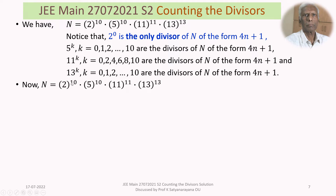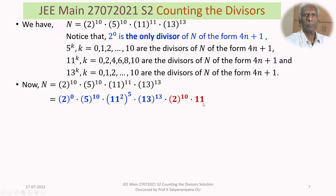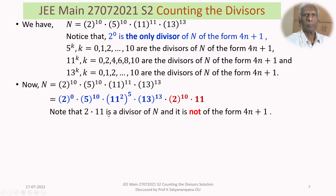N = 2^10 × 5^10 × 11^11 × 13^13 can be regrouped as 2^0 × 5^10 × (11^2)^5 × 13^13, with leftover factors 2^10 and 11. Now, 2 is not of the form 4N+1 and 11 is not of the form 4N+1. We ask: is 2×11 = 22 of the form 4N+1? No, it is not. So even though 22 is a divisor of N, it cannot be counted among the divisors of the form 4N+1.